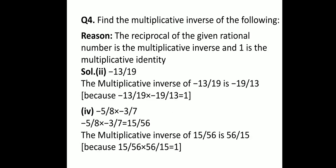Question number 4 is: find the multiplicative inverse of the following. As we discussed, to find the multiplicative inverse, I need to multiply the given rational number by another rational number so that the answer comes out to be 1. The concept used here is that the reciprocal of the given rational number is the multiplicative inverse, and 1 is the multiplicative identity. So I need to take the reciprocal of the given rational number to find out the multiplicative inverse.